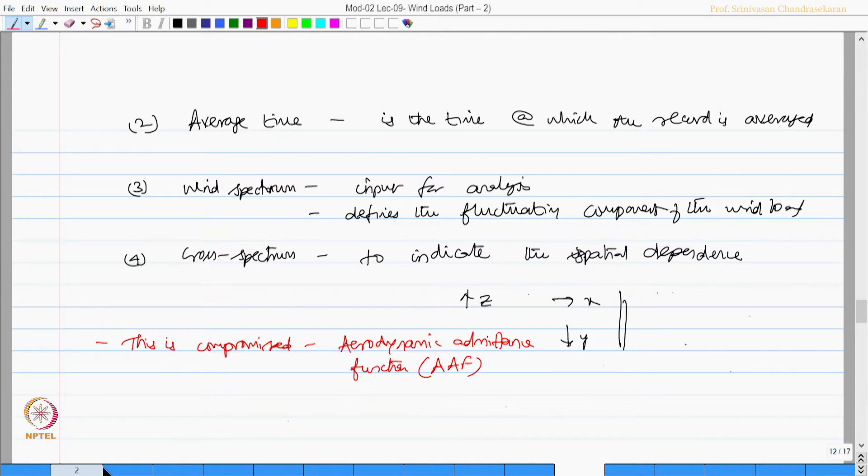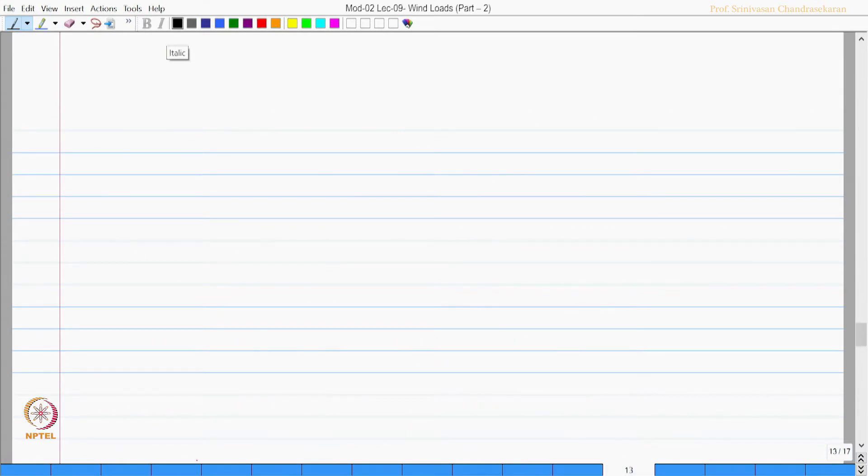There are two reasons why aerodynamic admittance function is being used. One reason is it is to bypass the rigorous random vibration theory. Second, AAF can be obtained experimentally with better accuracy. It can be easily quantified. Aerodynamic admittance function is better quantified.